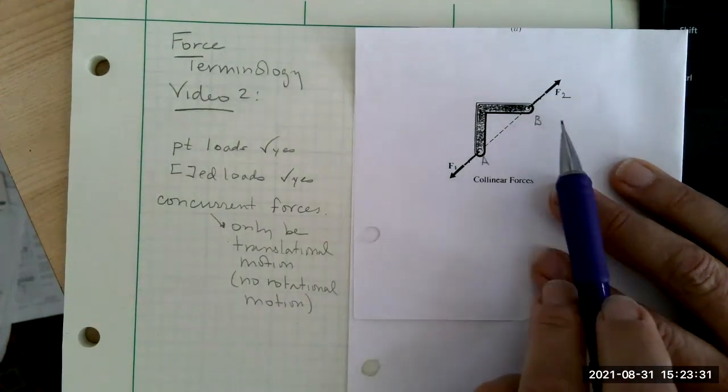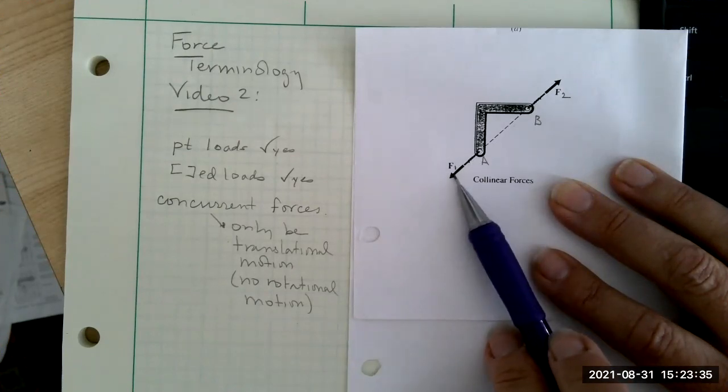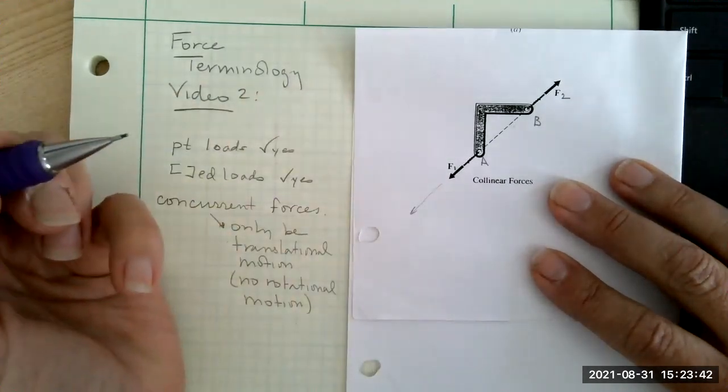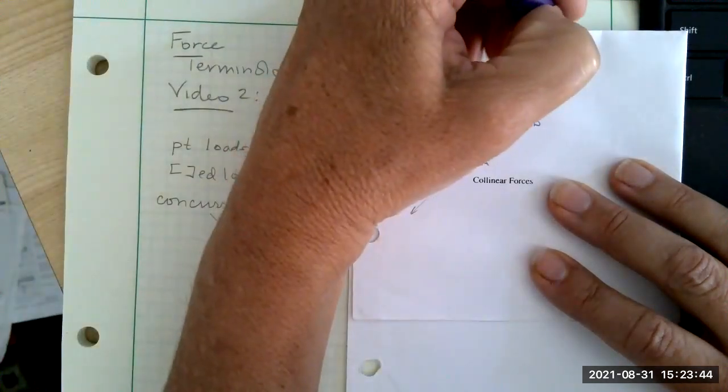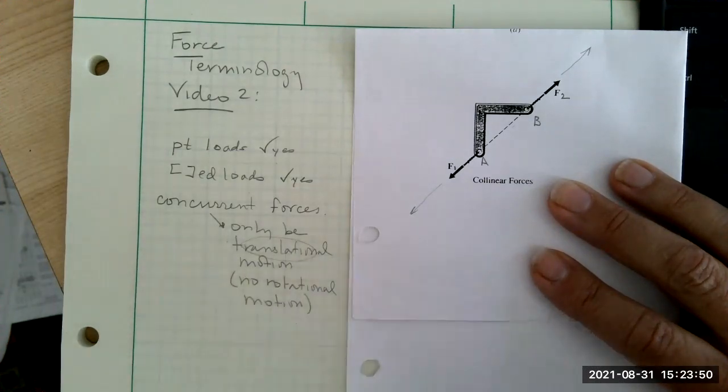F1 is acting here, F2 is acting here. If they are both pulling this, which way is the resultant force going to go? It's either going to go down if F1 is larger, or it'll go up if F2 is larger, which means it is only going in a translational direction.